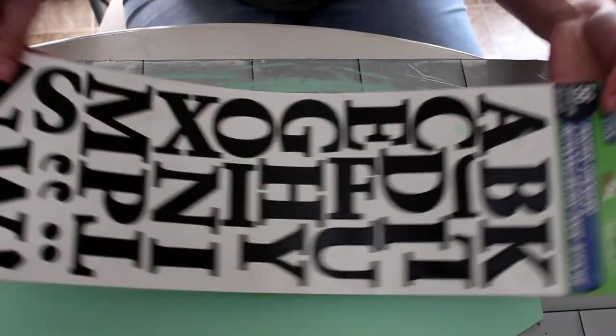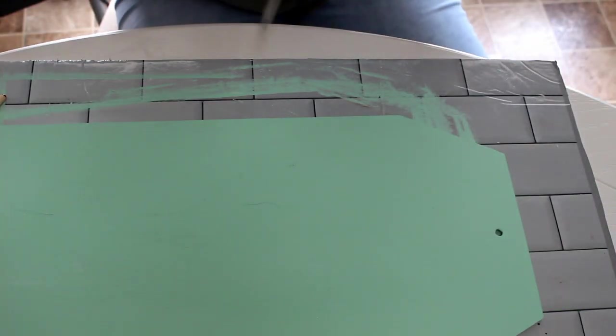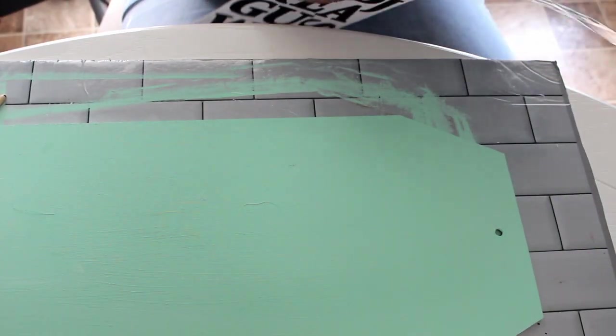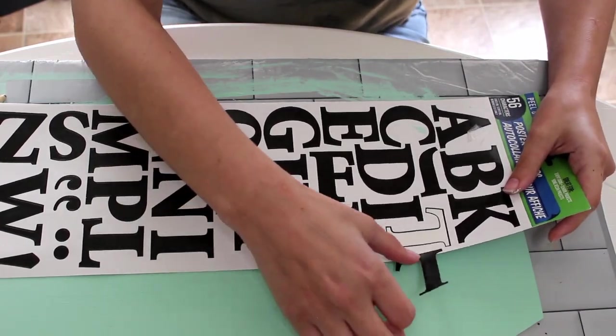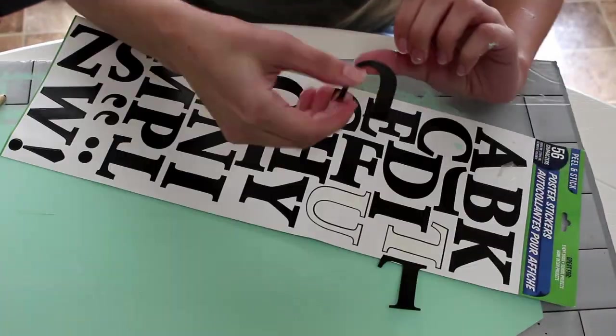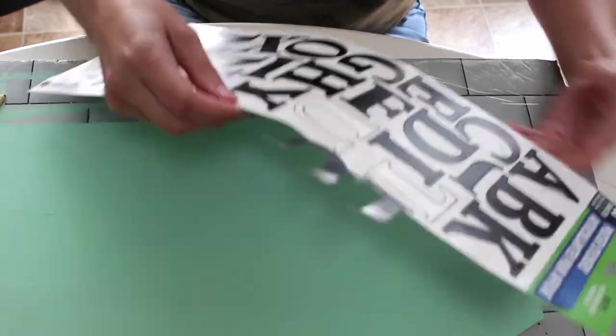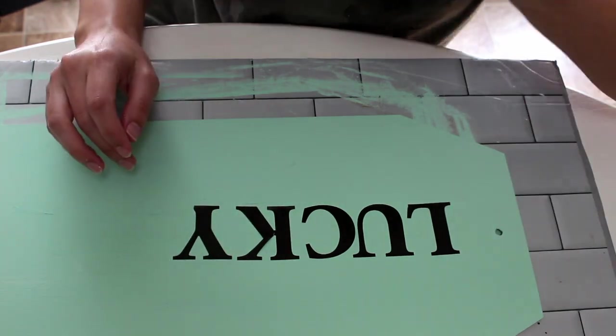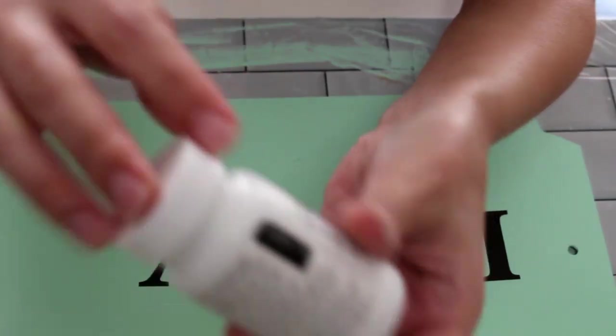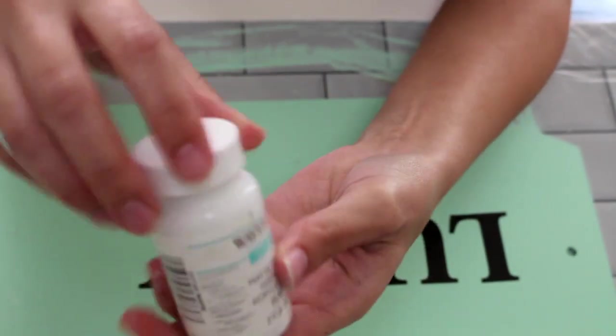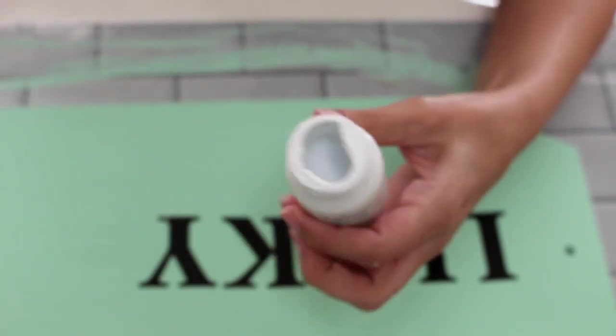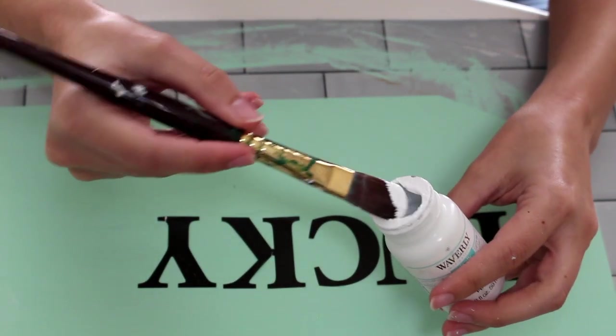Now you're going to grab your sign again and these poster letters that you can find at Dollar Tree in their school supply area. Then what I did is I grabbed the letters that I wanted. I'm going to spell out the word Lucky. And I just used the edge of that poster board to try and make sure that everything stays nice and straight. Now that the letters are all laid out the way we want them, you're going to take some paint. I'm using the Waverly chalk paint in white and we're going to give this sign, including the letters, a pretty thick layer of paint.